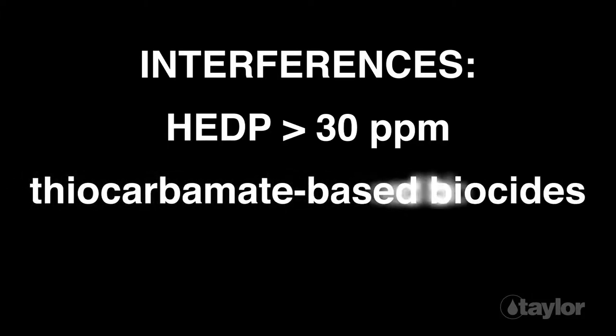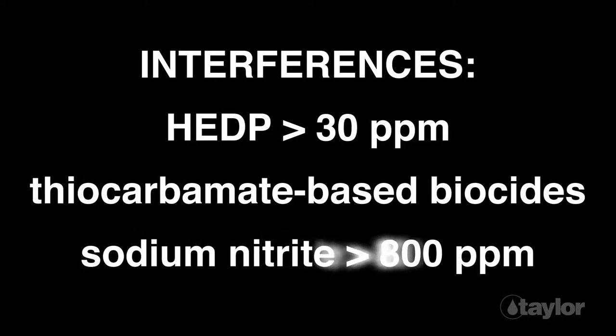Thiocarbamate-based biocides may cause interference. To prevent this, do not test while feeding thiocarbamates into the water system. Sodium nitrite levels greater than 800 parts per million may cause negative interference. To eliminate, dilute the sample with distilled, deionized, or molybdenum and nitrite-free water, and re-test.